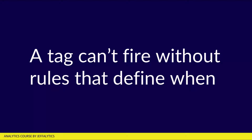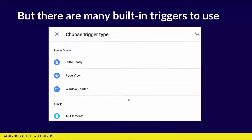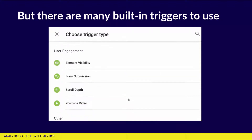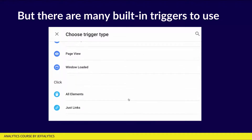A tag can't fire without rules that define when it fires. The most basic trigger — and the only default one available in your GTM account — is to fire that tag on all pages. It's called the all pages trigger. Every single time a page finishes loading, GTM will send that tag up and it will send it to the different tracking partners that you have a template installed for. But beyond that, there are many built-in triggers that you can use as well — quite a few things you can do.